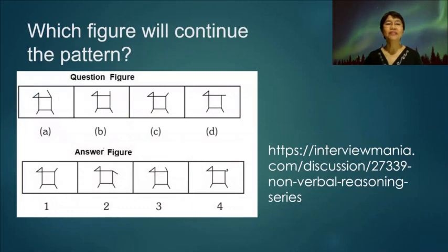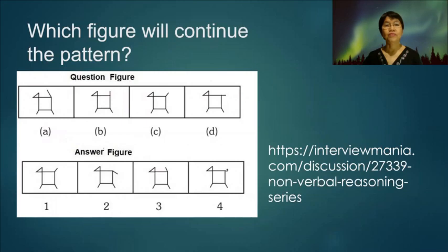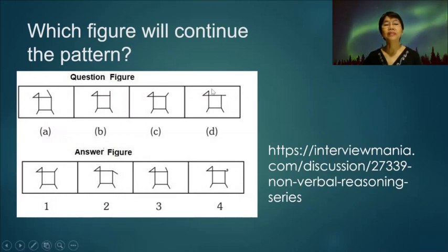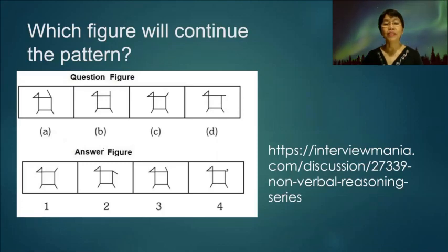Which figure will continue the pattern? We have here a stick dog. If we observe the movement of the tail, the tail is moving in a clockwise direction — going downward. So we expect that in the next figure the tail will be downward, and the answer is number two.